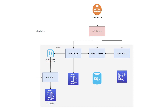Between the API gateway and the microservices, the API gateway is responsible only for authentication — making sure the claim of the user is valid. Whether a user is allowed to perform an action or not will be decided by the individual microservices. That's the pattern I like to follow.